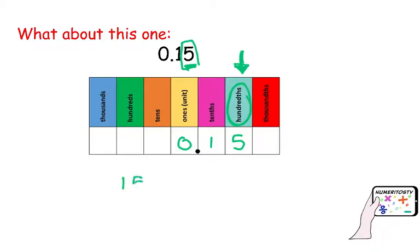So 15 will be my numerator, because we're looking at the whole decimal number. 15 hundredths — hundredths will be my denominator.